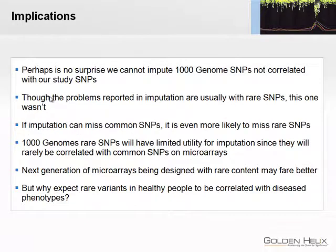So what are the implications? It's perhaps no surprise we can't impute a SNP that's not correlated with any of our study SNPs. But usually we hear it's the rare SNPs that are the problem. If we think about all this discussion of rare variants — finding something with a 1% minor allele frequency and then trying to do imputation in our original GWASs run on the 500K, 660K, Illumina 1 million arrays, OmniQuads, and so forth — we're going to be even more likely to have a problem doing this type of imputation to call these rare variants. It's going to have limited utility.